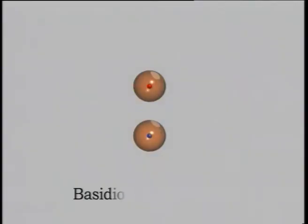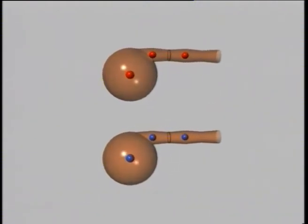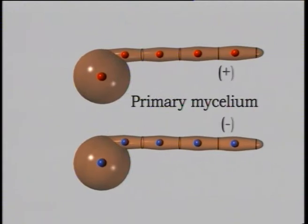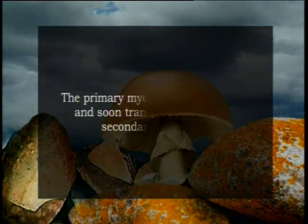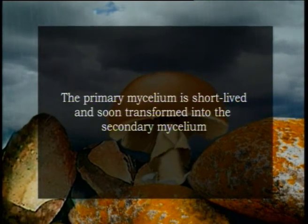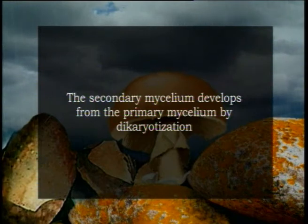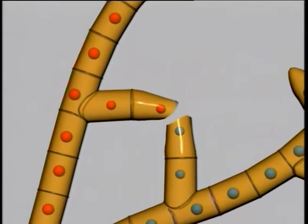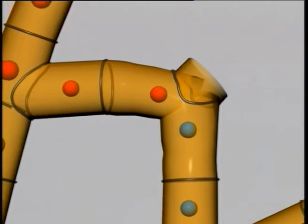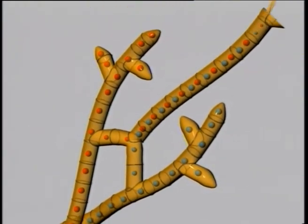The primary mycelium is formed from the germination of a basidiospore. Based on the type of basidiospore from which it is formed, the primary mycelium can be of plus or minus strain. This mycelium is haploid and is made up of less branched, hyaline hyphae which are septate and monokaryotic. The primary mycelium is short-lived and soon transforms into secondary mycelium by a process called dicaryotization, during which two primary mycelia of opposite strains fuse together by somatogamy, resulting in a dikaryotic cell.